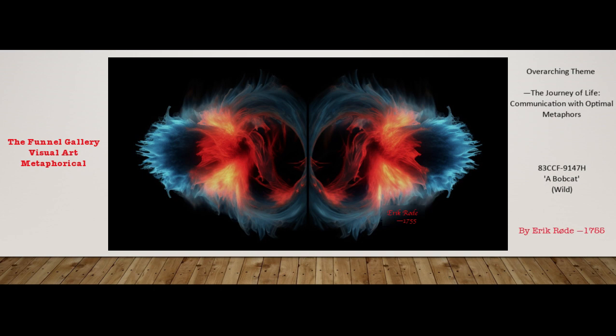Summary: art piece 83ccf9147h is metaphorically represented by a wild bobcat prowling along, appearing harmless at a distance but capable of harnessing different forms of energy up close. This metaphor aligns with the theme — the lifelong journey, transmitting with ideal metaphoric expression — emphasizing the art of effectively conveying life's experiences and insights through meaningful metaphors. The metaphor highlights that appearances can be deceiving, and just as the bobcat's true nature is revealed when observed closely, metaphors have the ability to uncover deeper meanings and insights.